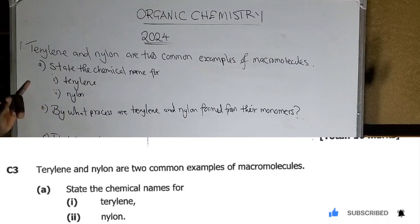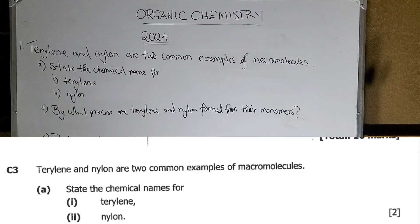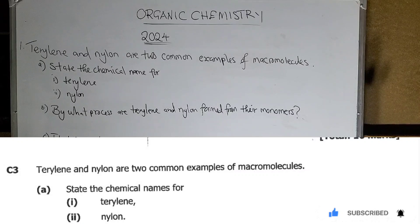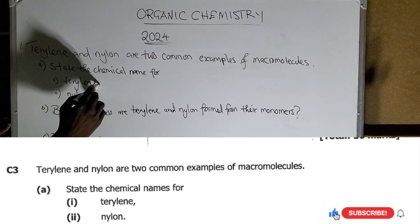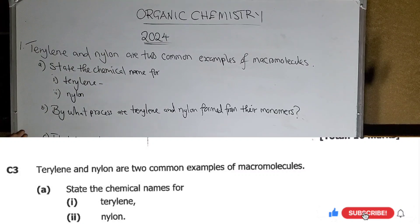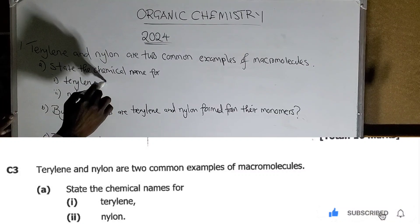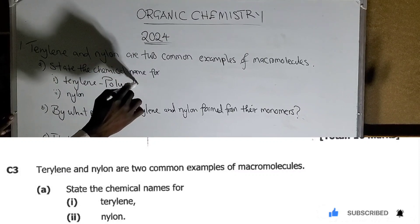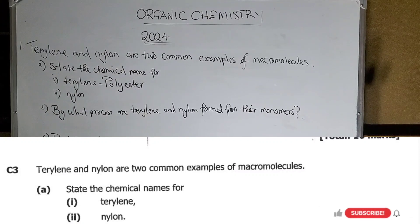The first one is saying, Terylene and Nylon are two common examples of macromolecules. The first question, which is question A, is saying state the chemical name for Terylene. Now, the chemical name for Terylene - Terylene is a polyester.